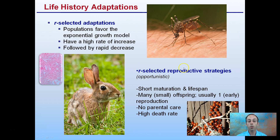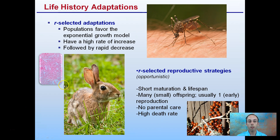R-selected reproductive strategies are more opportunistic. They have a short maturation period and a short lifespan. An example would be the mosquito — they have many small offspring and usually one early reproductive cycle. They have no parental care and a very high death rate. You can see this with ladybugs and mosquitoes. Rabbits can multiply at a very rapid rate, and can have a massive decrease in population sometimes too. More evident with mosquitoes and insects, which have a very short lifespan, no parental care, and sadly a very high death rate.